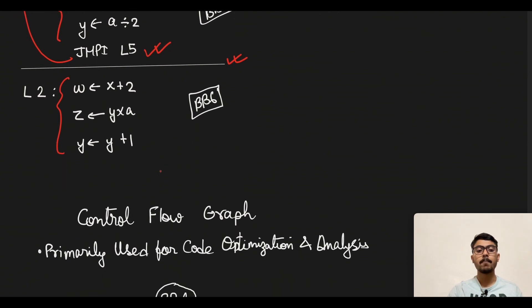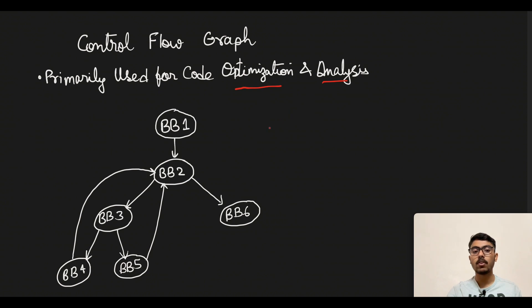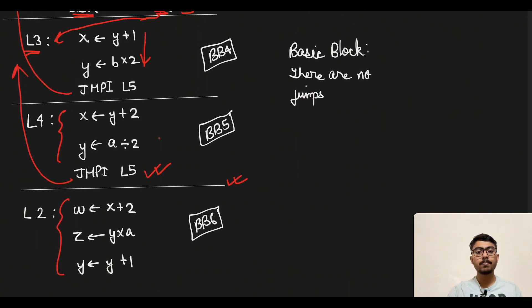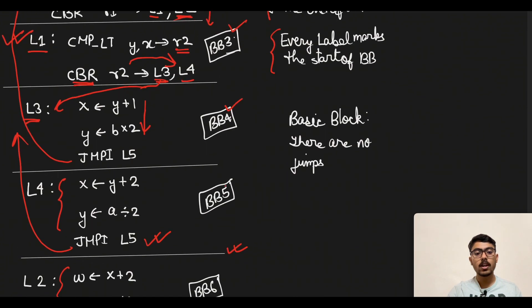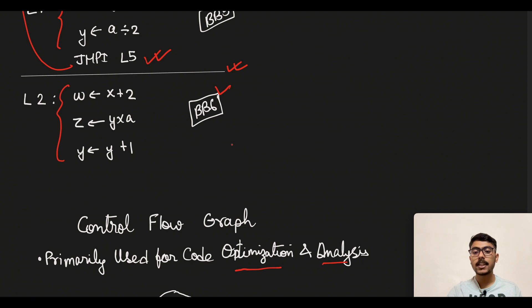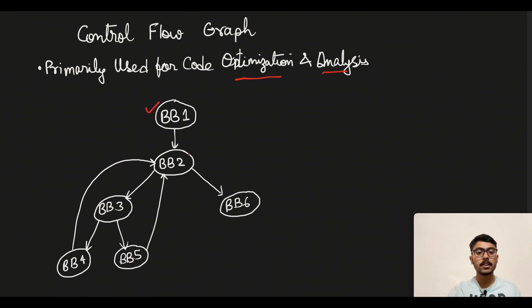Once we are done creating basic blocks, we need to determine the control flow graph of their execution. As mentioned, the CFG is mainly used in optimization and analysis of code to improve what the user has written before it is sent to the actual machine. We need to ensure every step is non-redundant and fully optimized. We had BB1, BB2, BB3, BB4, BB5, and BB6 — six basic blocks in total, so the control flow graph will also have six blocks.